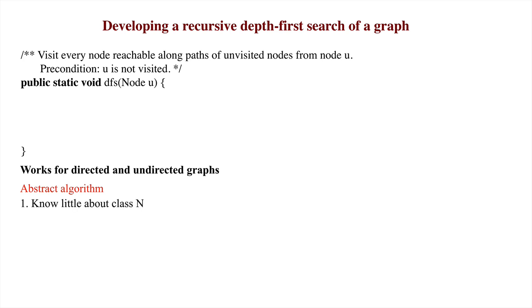For example, we don't look at a class node, and we don't describe how to maintain information about which nodes have been visited. We just allow ourselves to ask if U is not yet visited, and to write visit U to say that node U has now been visited.